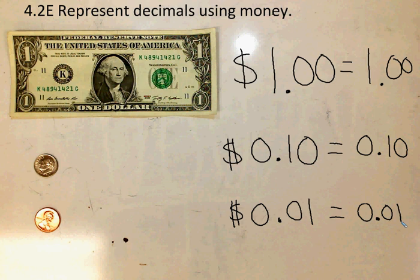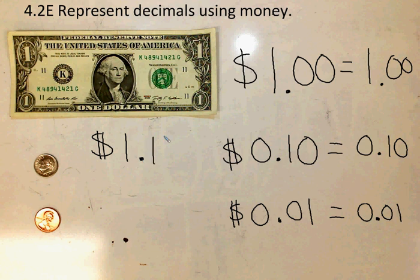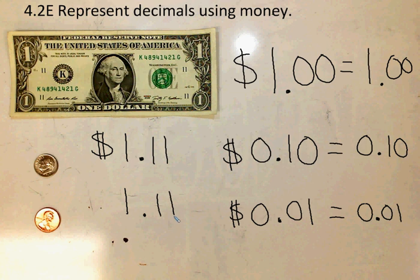Now if I want to represent the entire amount I have showing right now as money, I would write it with a dollar sign. I've got one dollar, one dime, and one penny — so that's one dollar and eleven cents. If I represent it as a decimal, it's very similar: one whole, one tenth, and one hundredth — so that's one and eleven hundredths.